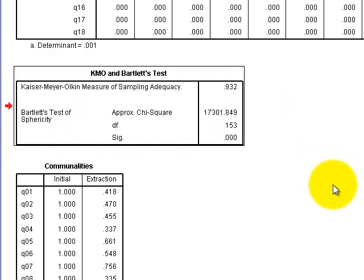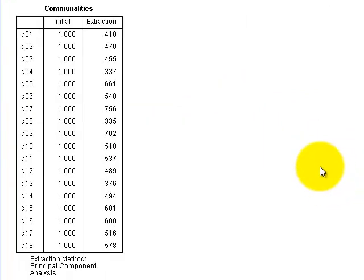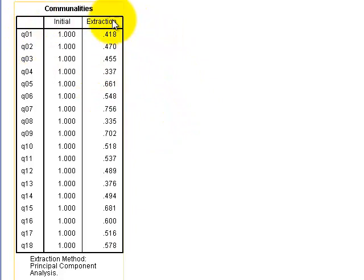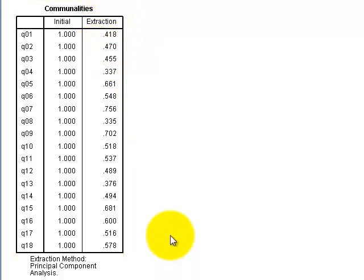Next is the communalities box, plus the extraction column. For example, question one has an extraction value of 0.418, meaning about 41.8% of its variance can be attributed to its factor. You're looking for any extraction value less than 0.3 — if a question falls below that threshold, it will likely cause problems. I don't see anything less than 0.3, so we're good to go.